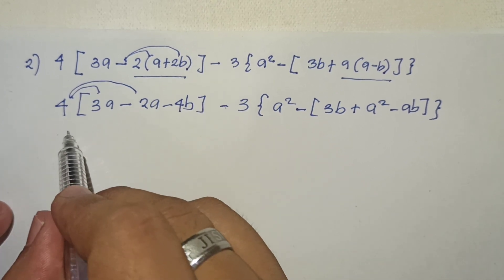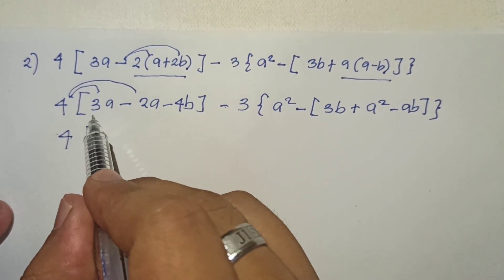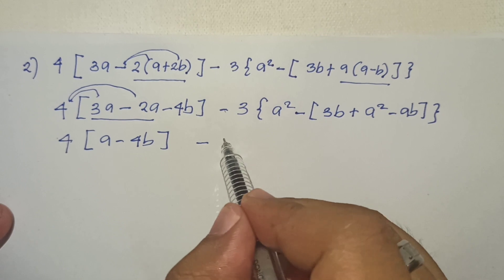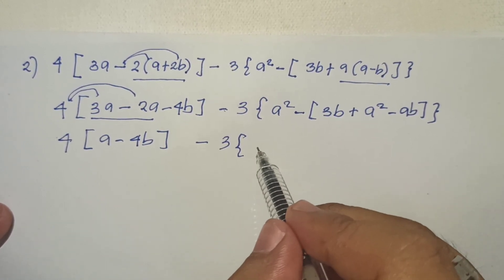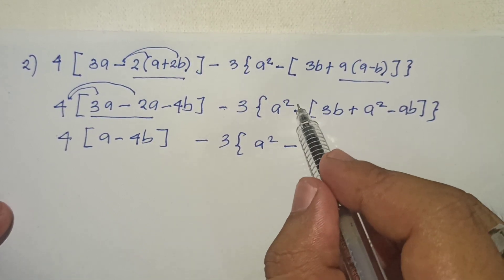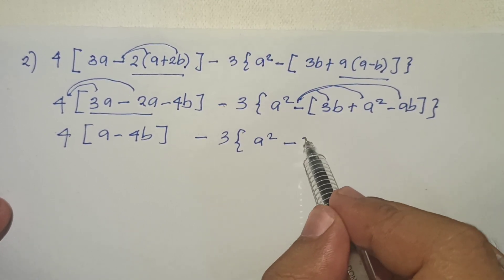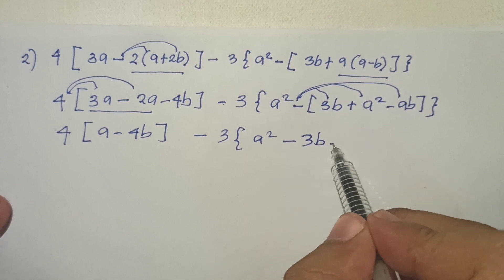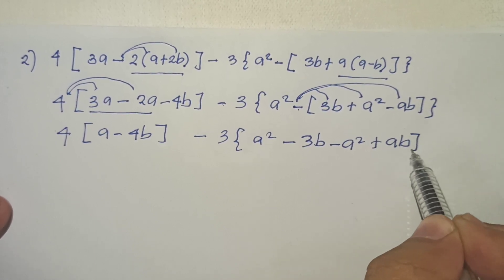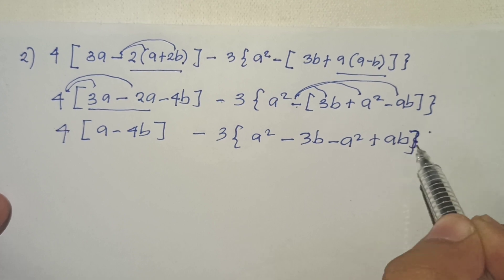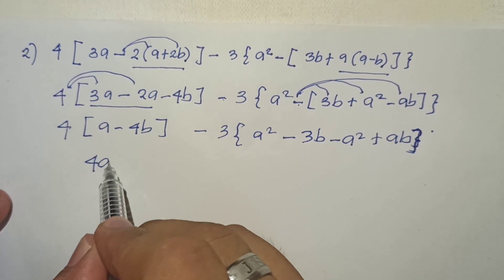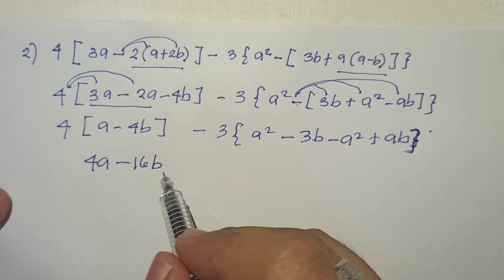We can now distribute, but we have to simplify first. So this is a minus 4b. We simplify a squared at this time, then we can distribute since there's nothing to combine yet. So we get negative 3b, next is negative a squared — why negative? Because of sign precedence — plus ab.